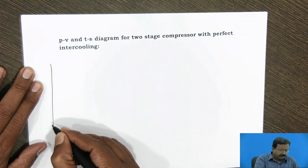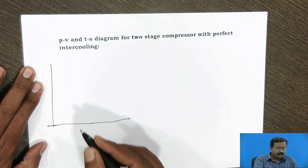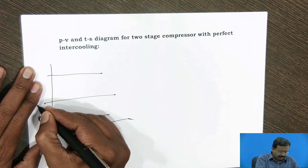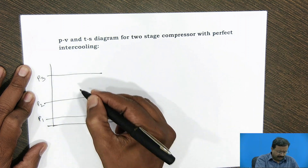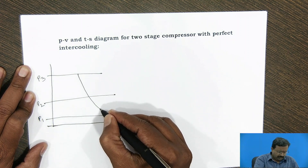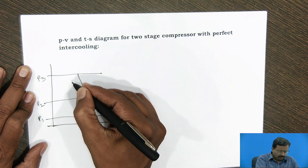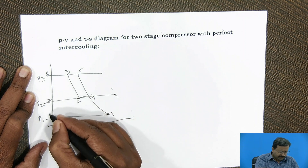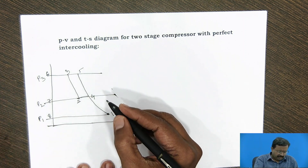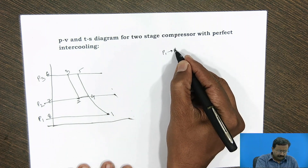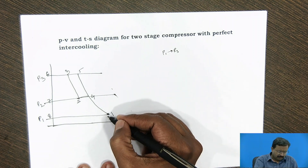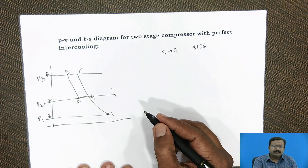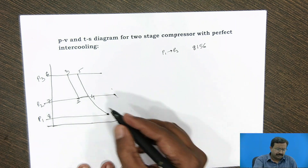Let us draw a PV diagram. In this PV diagram, I set this as my final pressure, this as my initial pressure, and this as some intermediate pressure. I call this pressure P1, this as P2, and this as P3. Now if I go from point 1, then 2, then 3, then 4, 5, 6, 7, and 8 — let us analyze each process. If I go from P1 to P3 in a single stage, the process is 8, 1, 5, 6, and the work required for compression is the area under the total diagram — that is the entire area 8, 1, 5, 6.